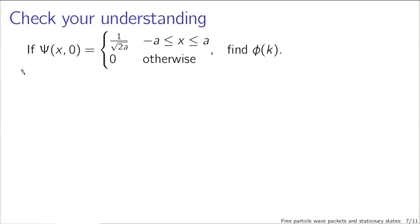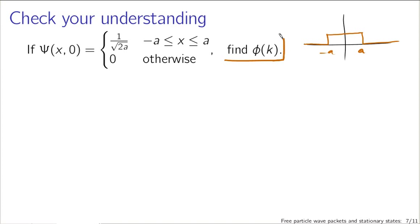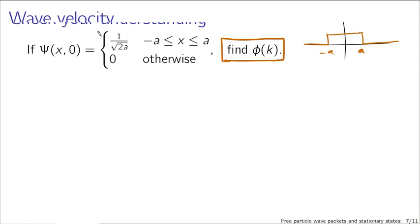To check your understanding, here is a simple example problem that requires you to apply the formulas on the previous page to go from a particular initial condition. In this case it's a constant — our initial wave function is zero everywhere except for a region between minus a and a. Your task: find the φ(k) that goes with this particular function. But before we finish talking about how to superpose these solutions, I want to look at the solutions themselves in a little more detail.